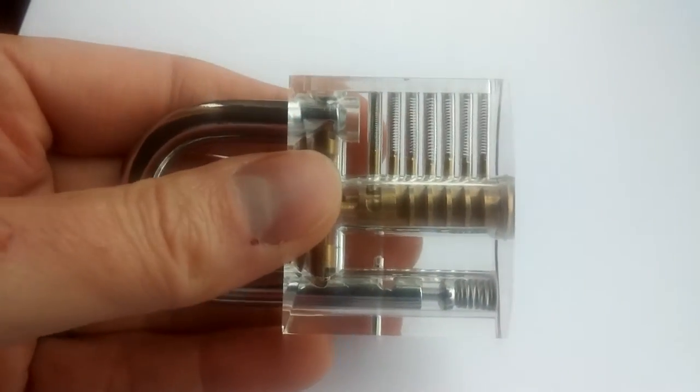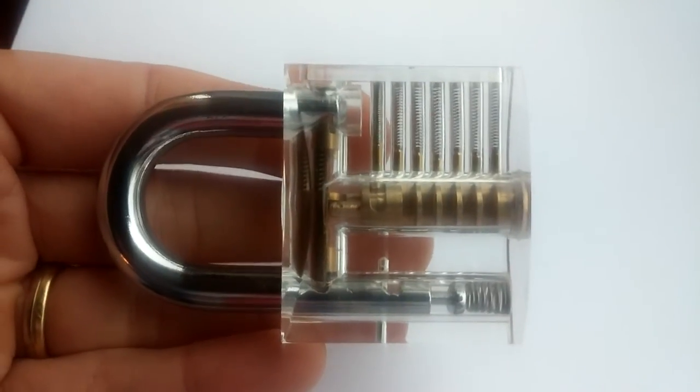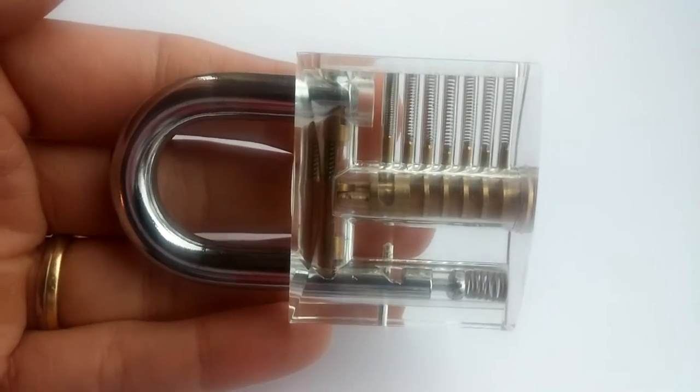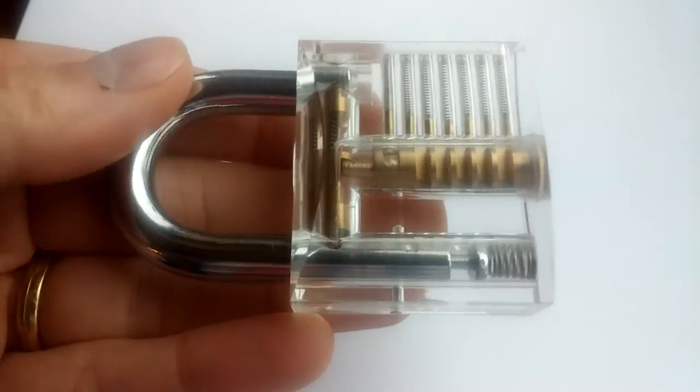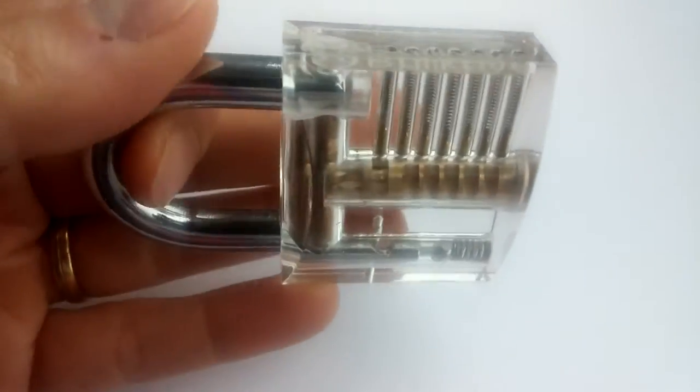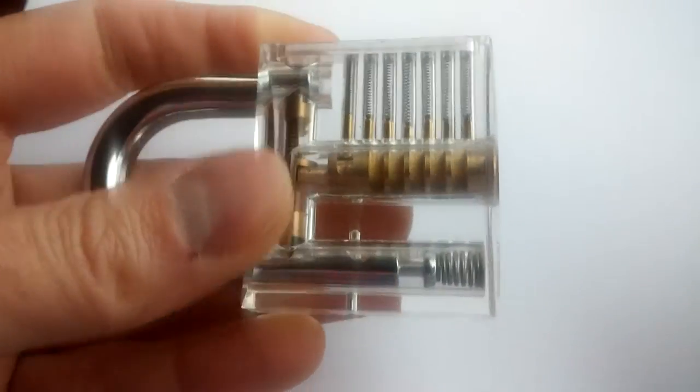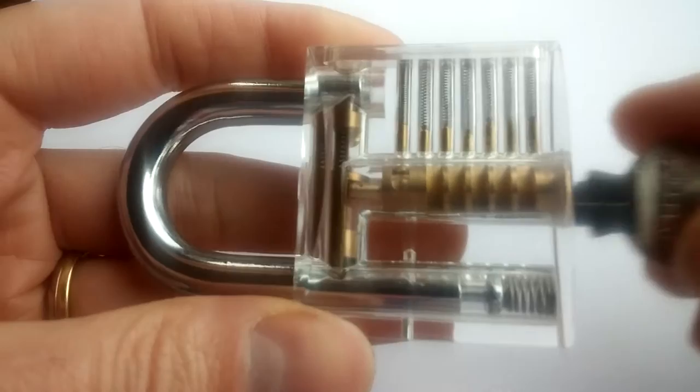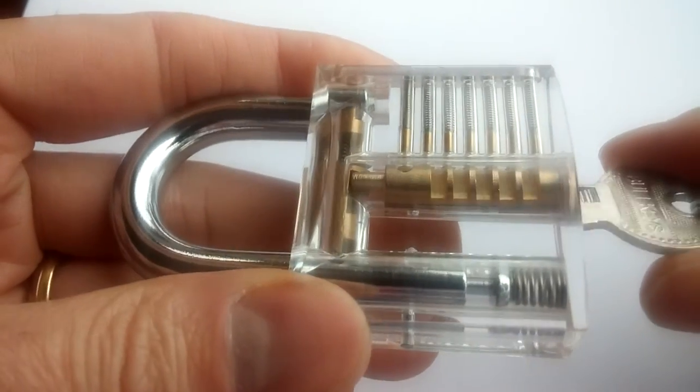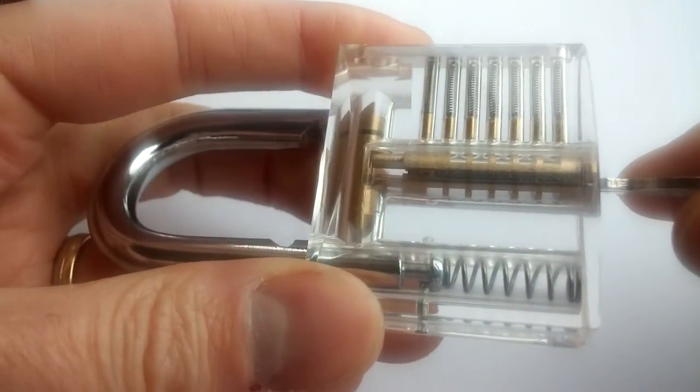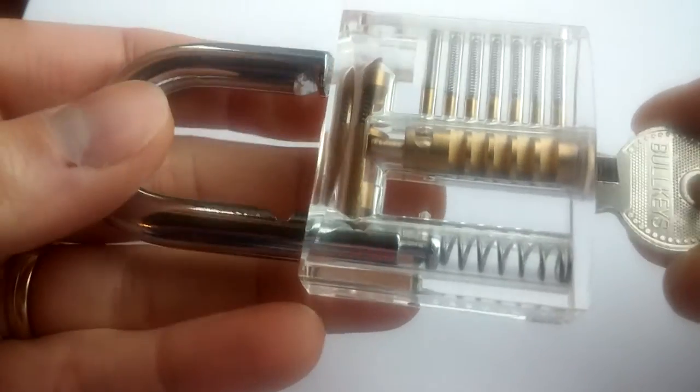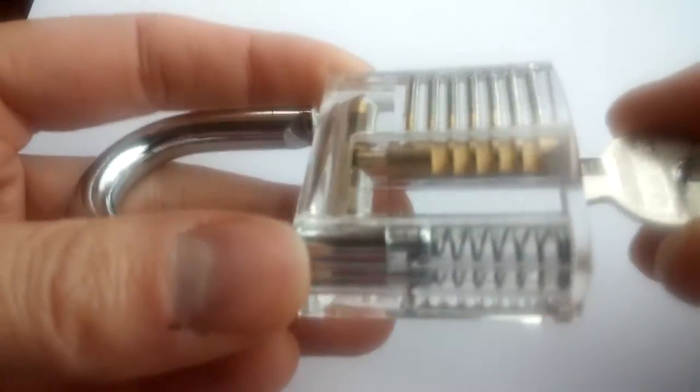So here's an item on cheap locks. This is a lock I bought in China for about three dollars in bulk. This is from a manufacturer called Bulkies. And here's a padlock with six pins. It's interesting to see how these locks are made cheap and what consequences this has.